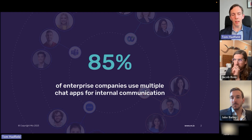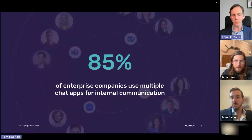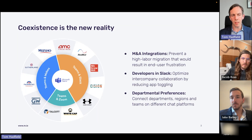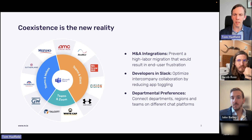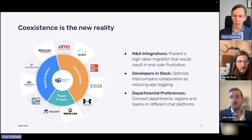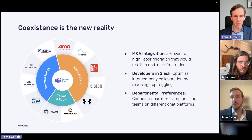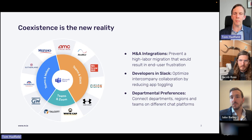Given Microsoft's extensive APIs, you can now use a third-party application like Mio to connect Microsoft Teams with other chat applications. The coexistence of multiple chat applications is the new reality. It may be due to a merger or acquisition, developers using Slack while others use Teams, or different lines of business using different tools. Whatever the driver, you can now connect all users within your company so they can chat with each other regardless of which chat application they're using.